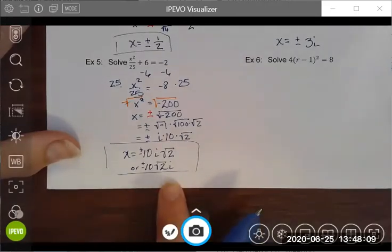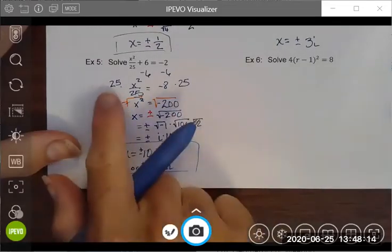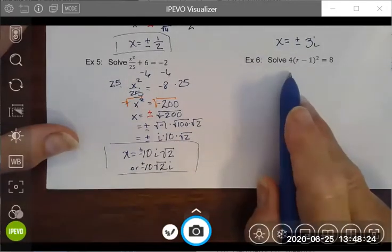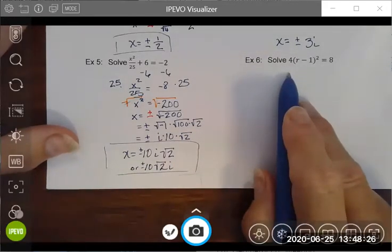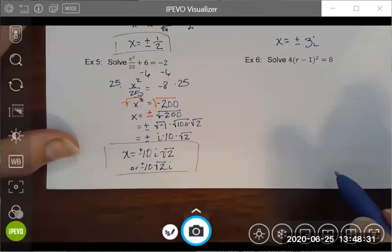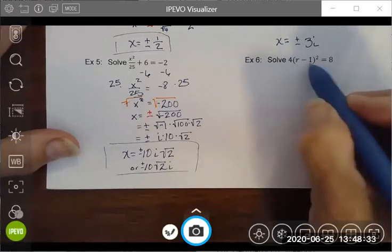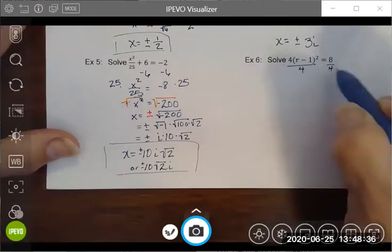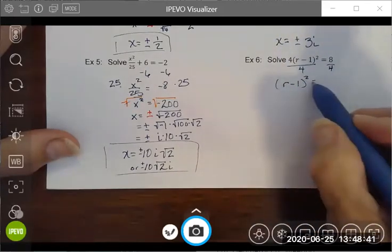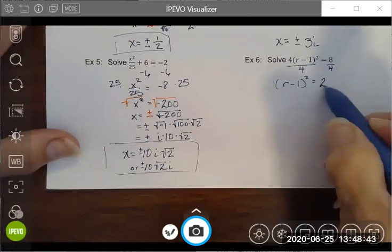That's how we can handle our imaginary numbers, taking the square root of a negative, and an example where the variable is being divided, and how to use inverse operations to isolate that variable. The next one looks intimidating, but it's really pretty straightforward. Just like with the previous ones, I am going to isolate my grouping symbol by dividing by four.